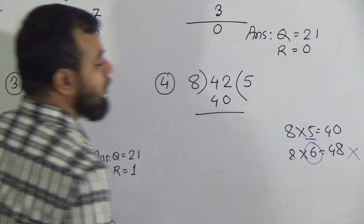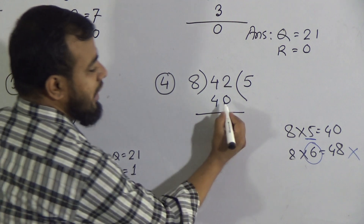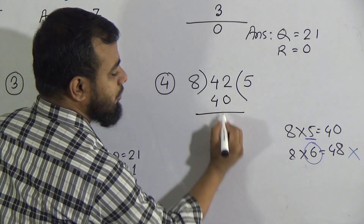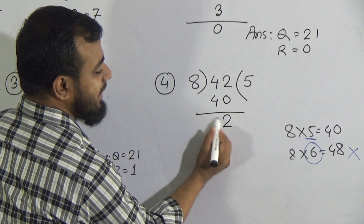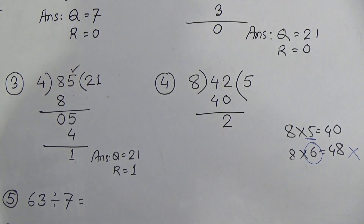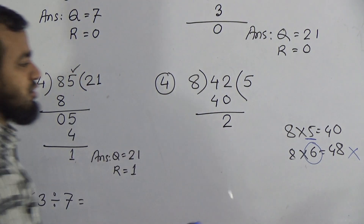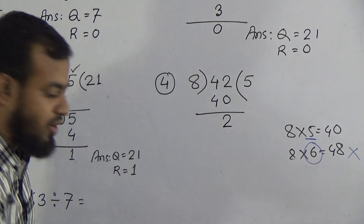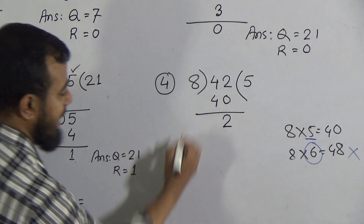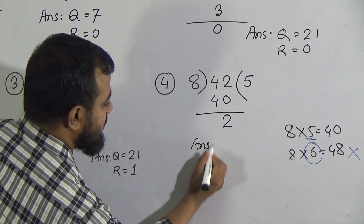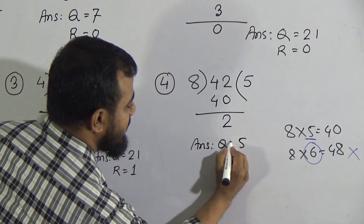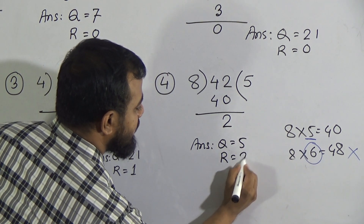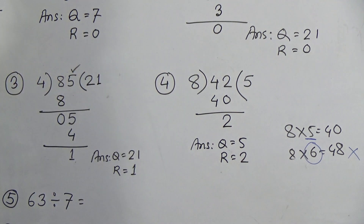Subtract 40 from 42: 2 minus 0 is 2, 4 minus 4 is 0. The leading zero doesn't need to be written. The answer is Q = 5 and R = 2. I hope you have understood.